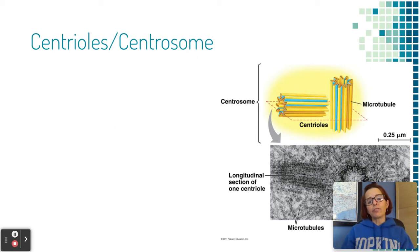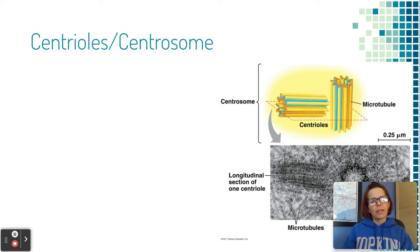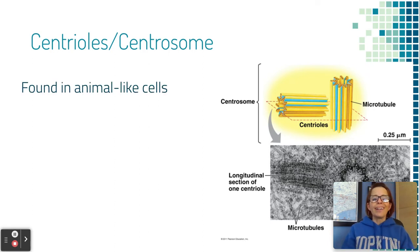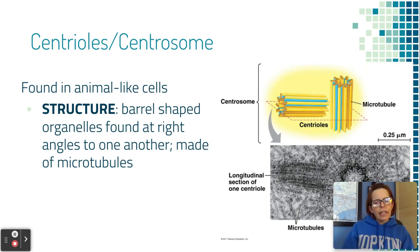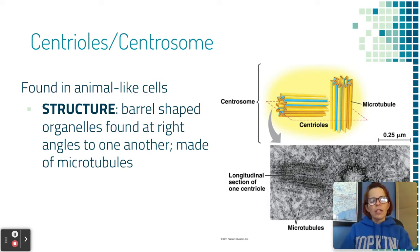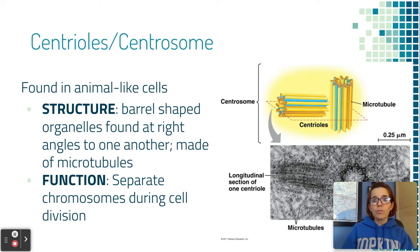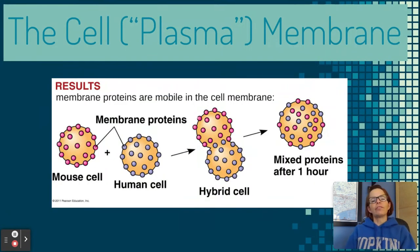The last thing made out of microtubules are called the centrioles, sometimes referred to as the centrosome. That organelle becomes more important when we talk about cell division — mitosis and meiosis — because those centrioles grab hold of the chromosomes and pull them to opposite sides of the cell. They are barrel-shaped organelles found at right angles to one another, made of hollow microtubules, and they separate chromosomes during cell division.